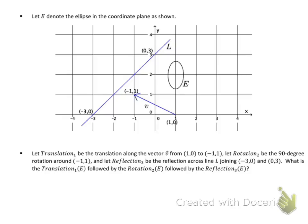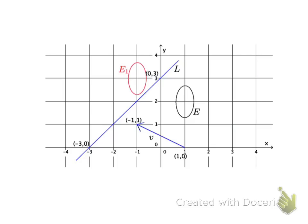We're going to do it in the order stated: translation 1 of E, followed by rotation 2 of E, followed by reflection 3 of E. First, the translation — the translated figure goes along the vector, taking every point over 2 and up 1. So every point on the ellipse moves over 2 and up 1. You can see the center of the ellipse here, over 2, up 1. That gives us figure E1 after the translation.